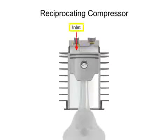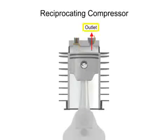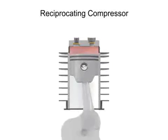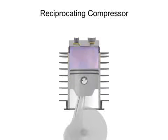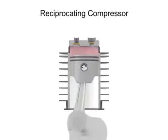The inlet, sometimes called the suction valve, allows atmospheric air to enter the cylinder. The outlet, sometimes called the discharge valve, ejects the newly compressed air from the cylinder. As the crankshaft turns, the piston lowers and raises, changing the available volume within the cylinder.